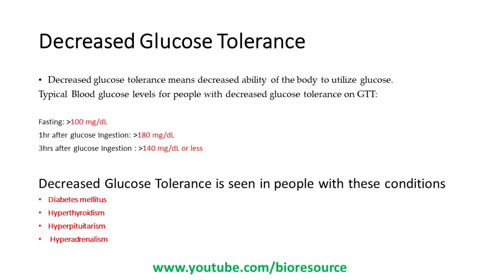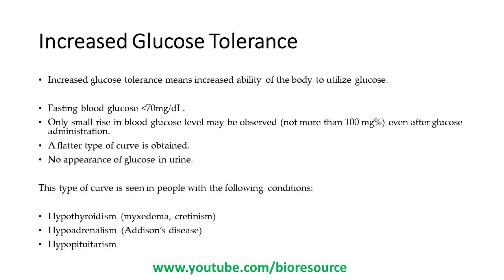Decreased glucose tolerance is seen in people with diabetes mellitus, hyperthyroidism, hyperpituitarism, or hyperadrenalism. People with these disorders tend to show a decreased glucose tolerance curve.